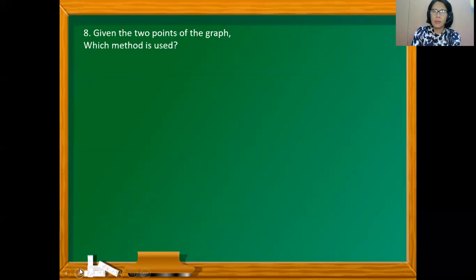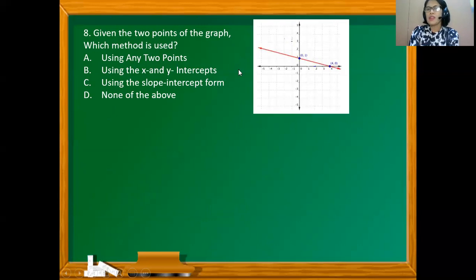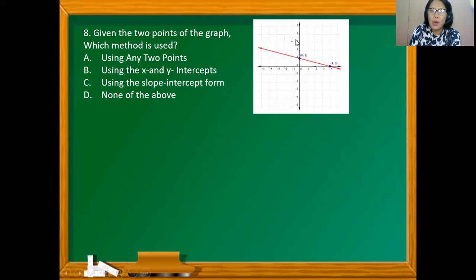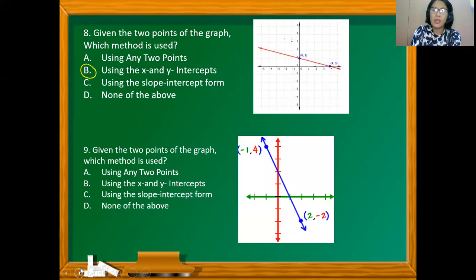Given the two points of the graph, which method is used? We are asked how the line was constructed or graphed. Given the two points — the y-intercept and x-intercept respectively — the graph was sketched using the x- and y-intercepts. For the next question, given any two points, the two-point method is used to sketch the graph.